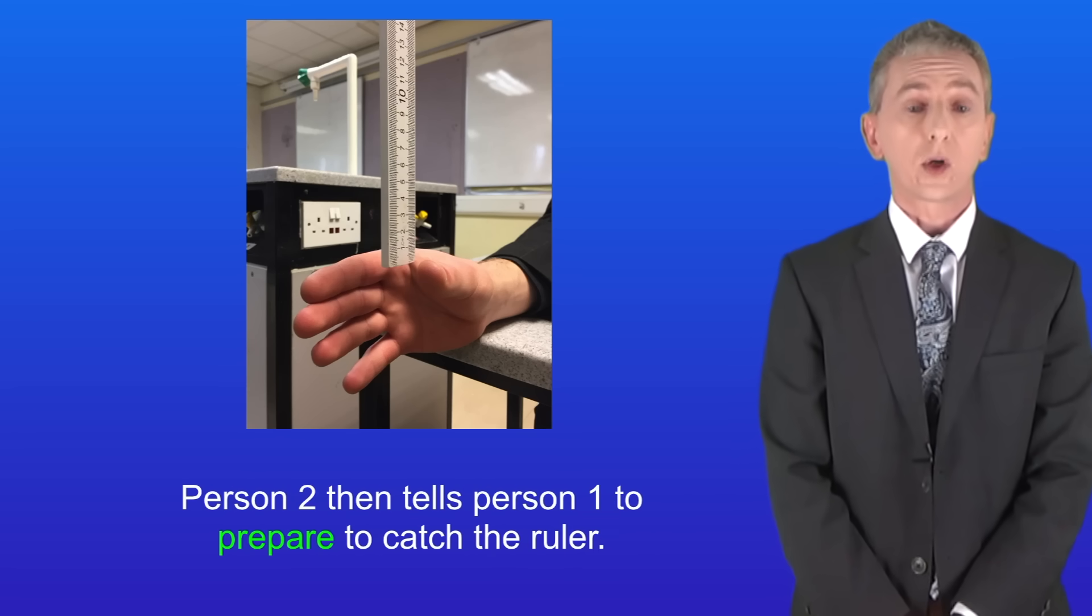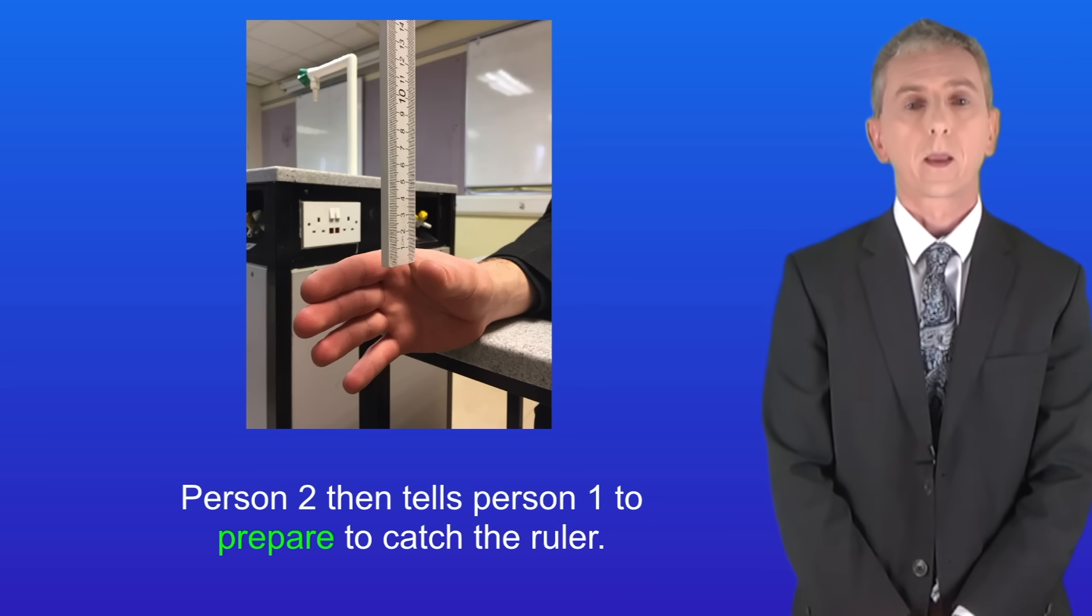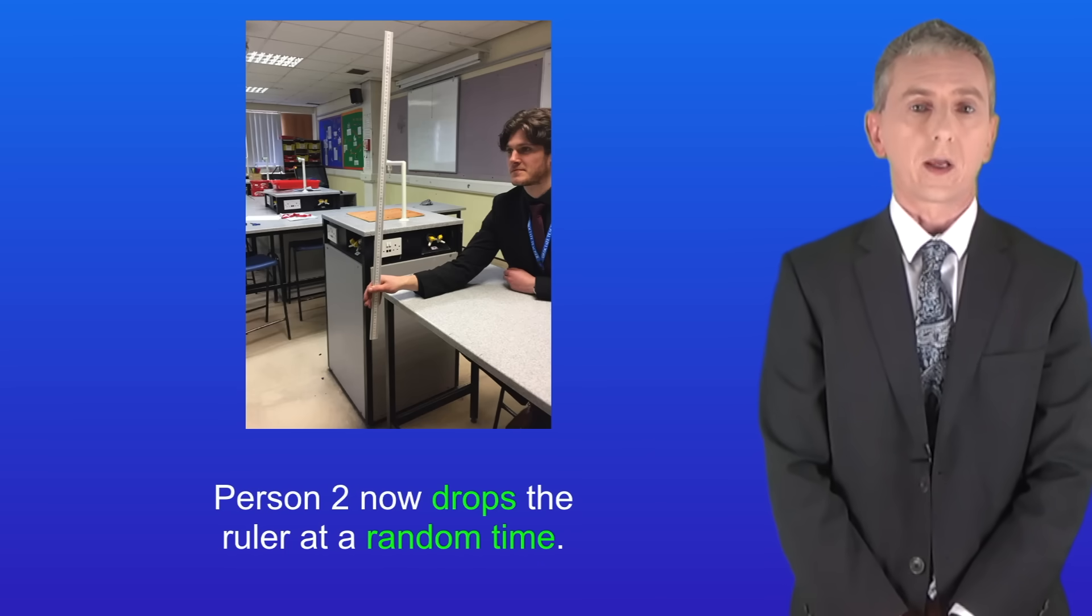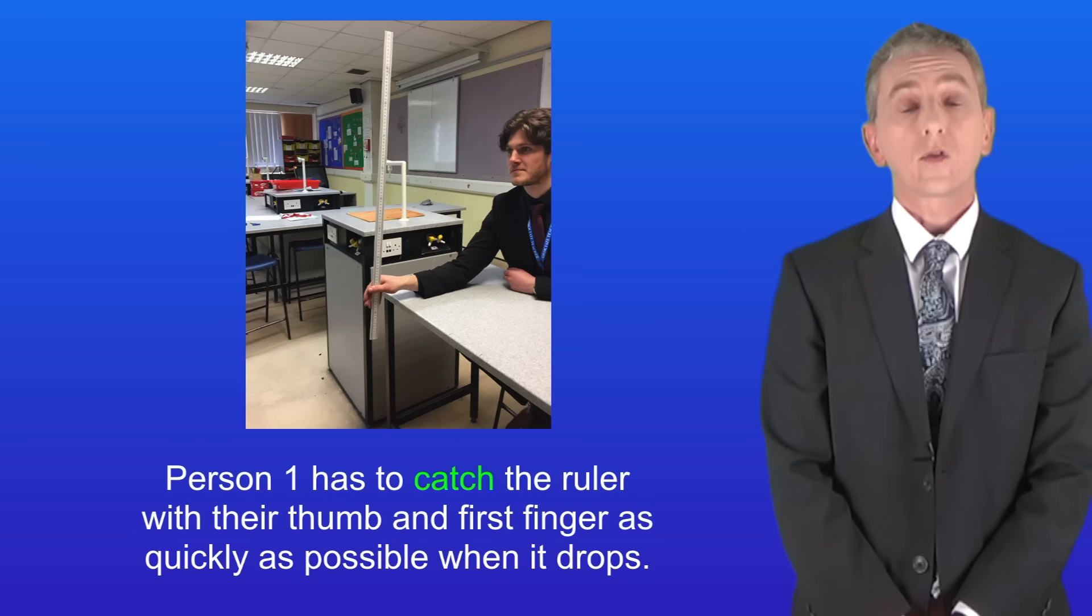Person two then tells person one to prepare to catch the ruler. Person two now drops the ruler at a random time. Person one has to catch the ruler with their thumb and first finger as quickly as possible when it drops.